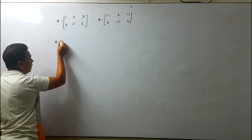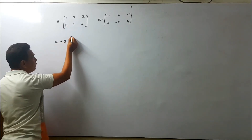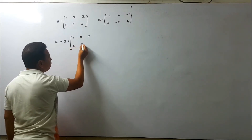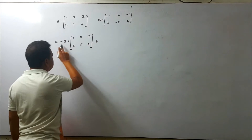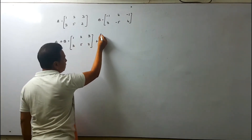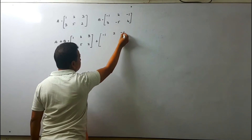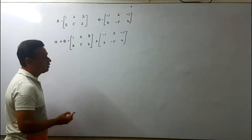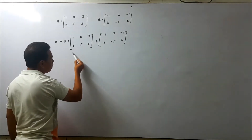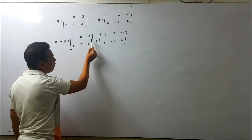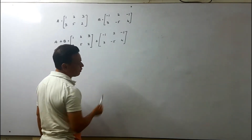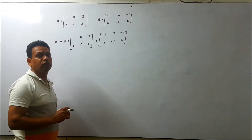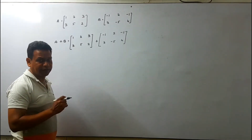For A plus B, we take the positive sign first. So we have matrix A: 1, 2, 3, 3, 5, 2, plus matrix B: minus 1, 2, minus 1, 3, minus 5, and 4. You can check — there are 2 rows and 3 columns, so the order of the first matrix is 2 by 3. Since the orders are the same, we are able to perform addition.